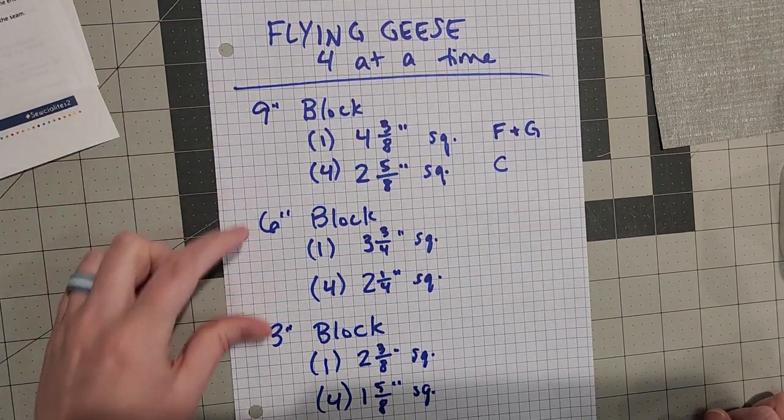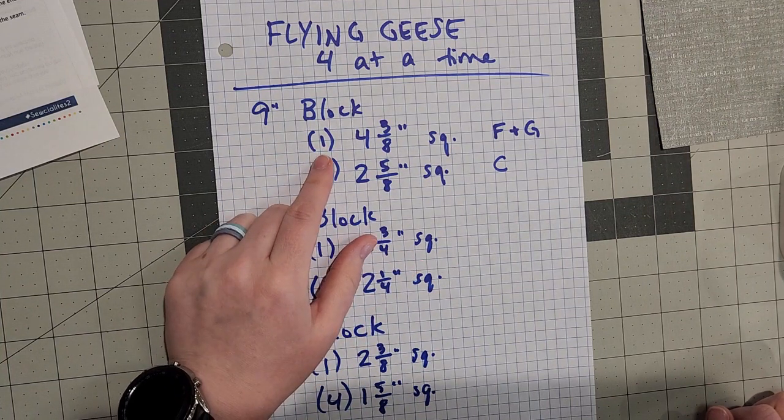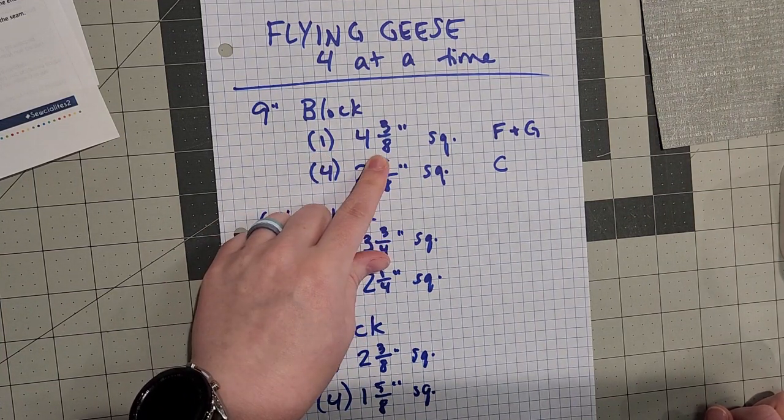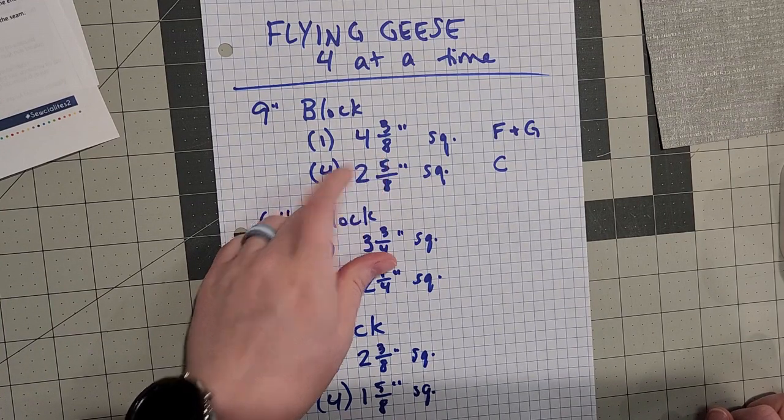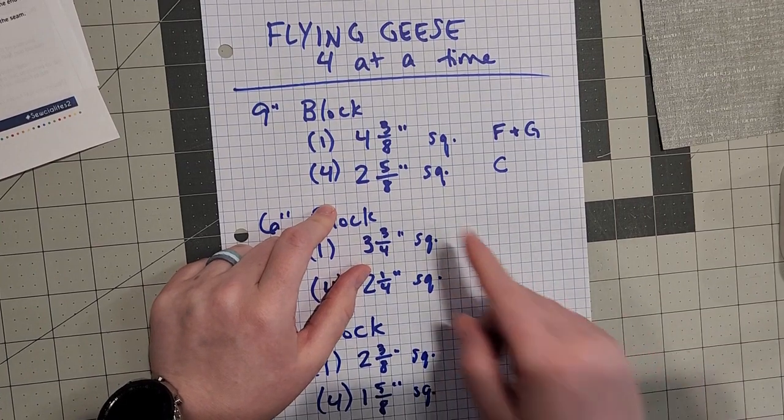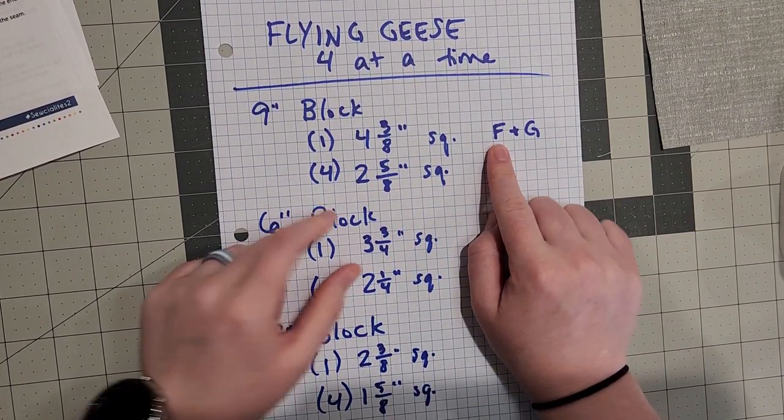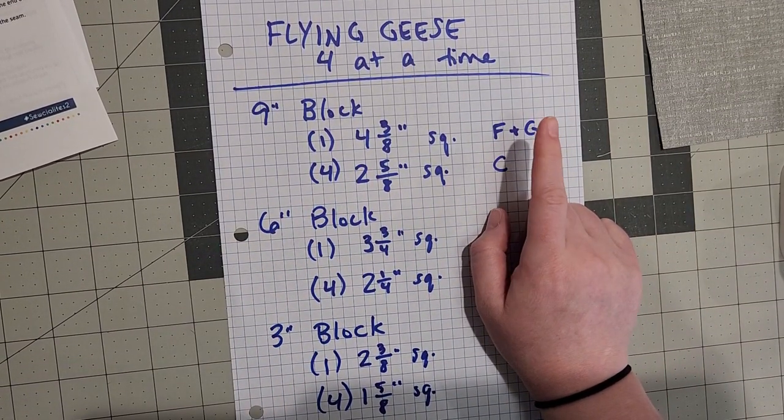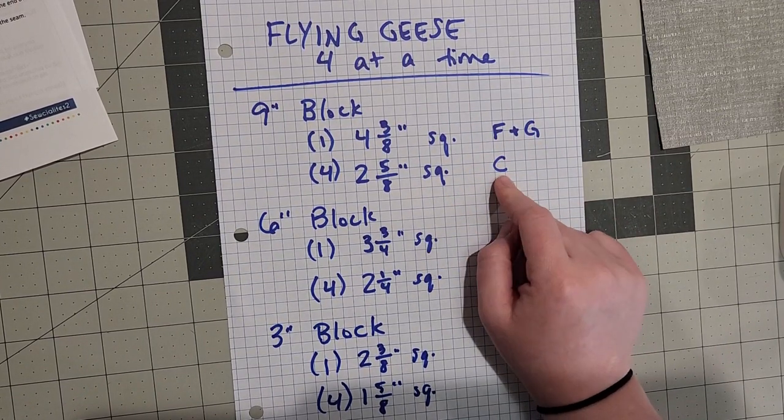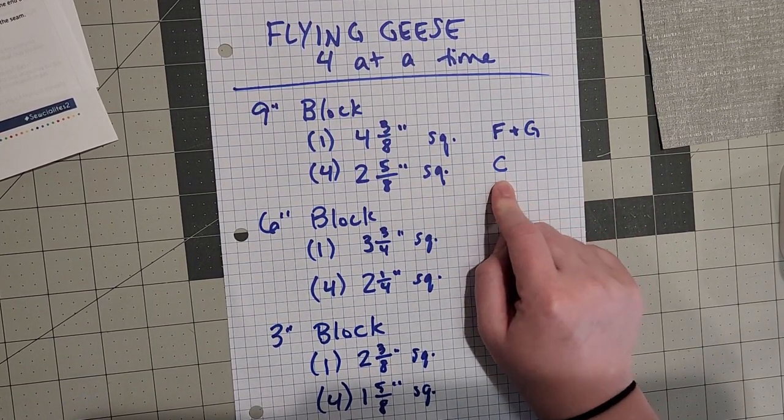So nine inch, six inch, three inch. For each set you're going to need one larger square of whatever print fabric or colored fabric and then four smaller squares of whatever your background is. Since there's two sets that's going to replace pieces F and G in the pattern and then it'll replace most of pieces C.